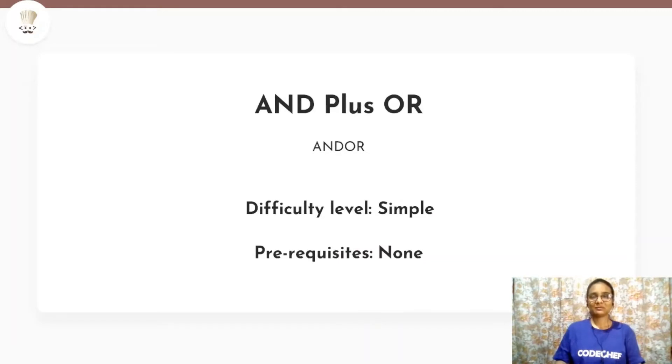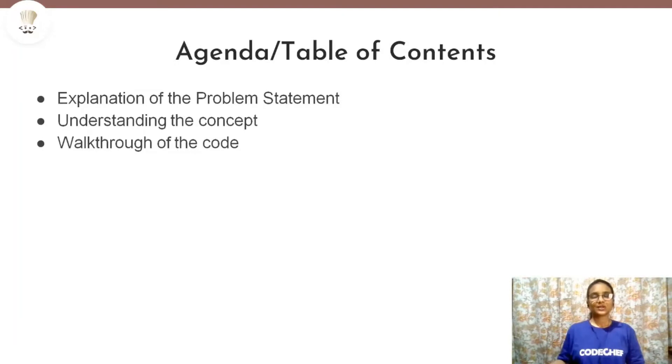Today we'll be solving the problem AND plus OR which is the October lunchtime problem and the difficulty level of the problem is simple. So, let us see the agenda for today. The agenda for today is that first we will understand the problem statement as usual, then we will try to understand the concept by which we can solve the problem and then we will do a quick walkthrough of the code which will be in Python. So, let's get started.